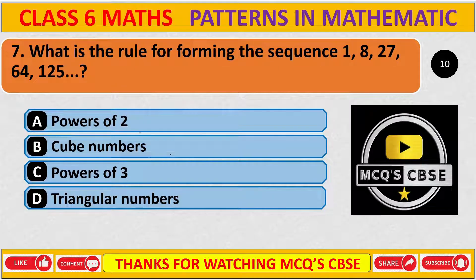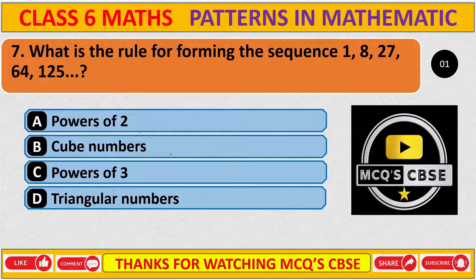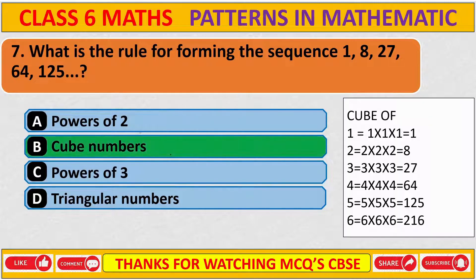What is the rule for forming the sequence 1, 8, 27, 64, 125? The correct answer is B. These are all cube numbers: 1 cubed is 1, 2 cubed is 8, 3 cubed is 27, 4 cubed is 64, and 5 cubed is 125.